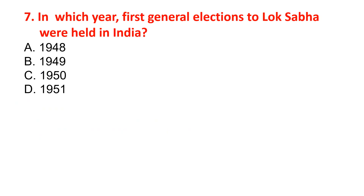In which year were the first general elections to the Lok Sabha held in India? Options are 1948, 1949, 1950, or 1951. The correct option is 1951.